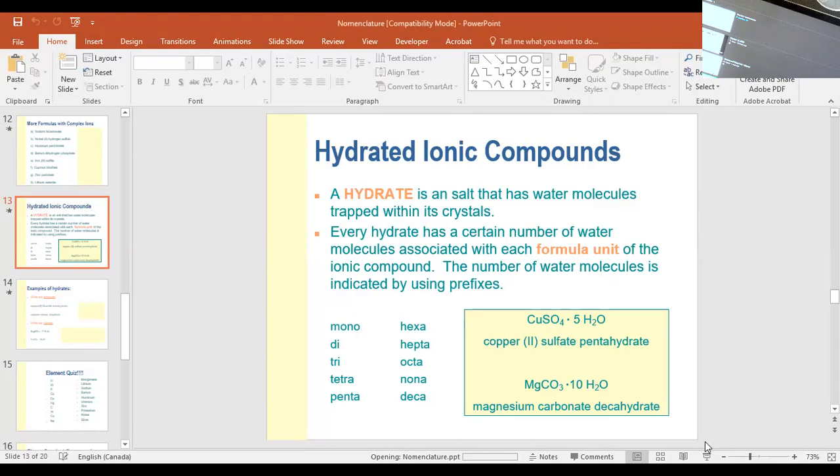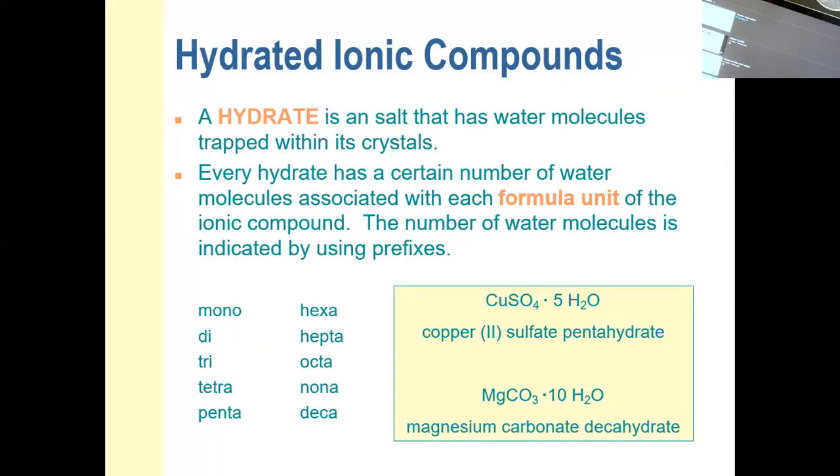This is a quick short video to finish off ionic compounds in our nomenclature section for grade 11 chemistry. We've dealt with type 1 ionic compounds that are binary, so those have just a metal element and a non-metal element, and the metal has just one possible charge on it.